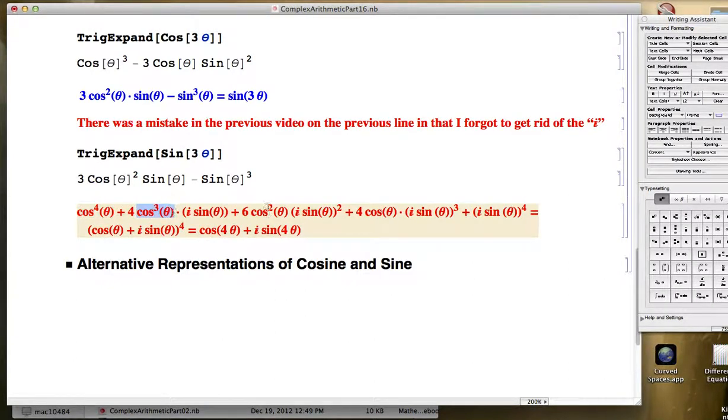descending powers of the first term, so the cosine keeps descending in power. Here it's to the zero power, so there's a one. Cosine to the zero power would be one. And you have ascending powers of the second term, i sine theta, first to the zero power, then to the first power, then squared, then cubed, then to the fourth power. And then the coefficients, the binomial coefficients are one, four, six, four, and one.